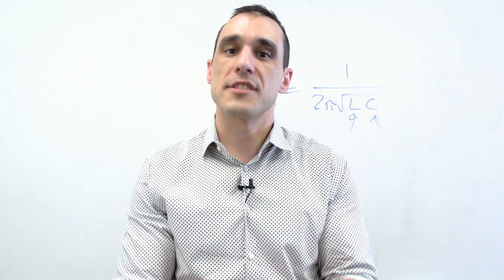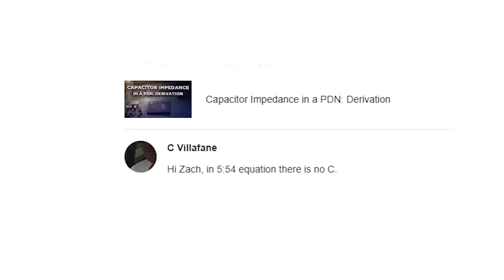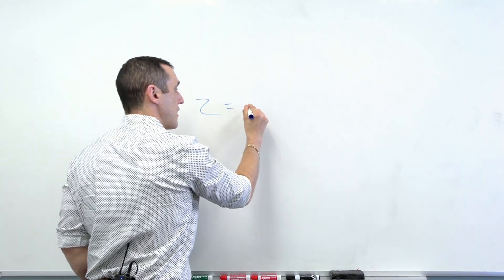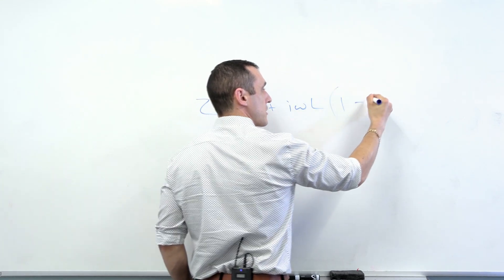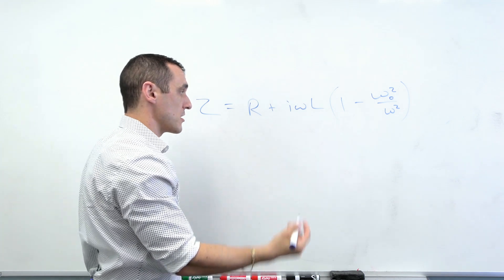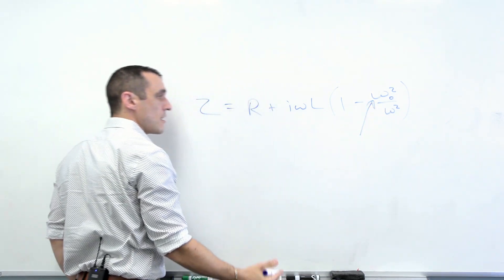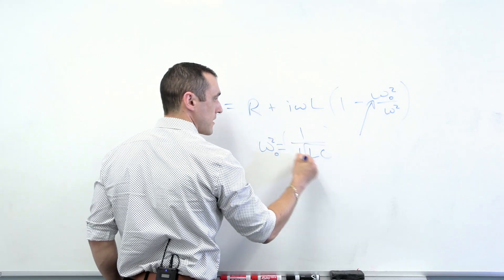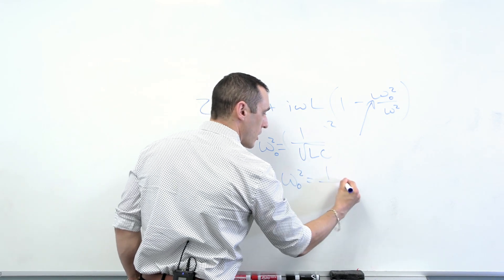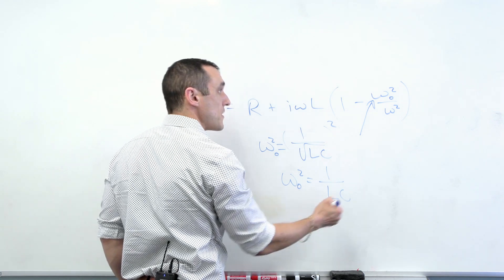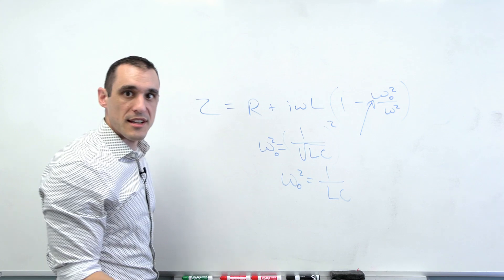Our next question was left on our capacitor impedance video, in which I derive the impedance of a capacitor with its effective series resistance and effective series inductance. C. Viafane writes: in the equation at 5:54, there is no C. So in that video I was deriving the impedance of a series RLC circuit. As you can see in that equation, there is no C value — and that's because it's lumped in to the natural frequency. Remember, this natural frequency is equal to one over the square root of LC. If you square both sides, natural frequency squared equals one over LC, so the C value is lumped in. Just remember when you're dealing with RLC circuits and you see omega-zero and they omit the L and the C, it's because they are lumped into this natural frequency definition.